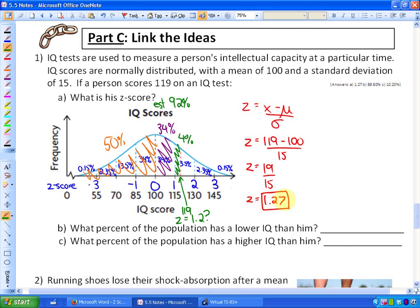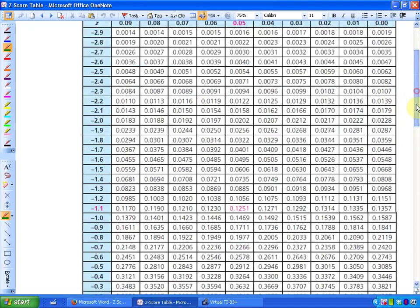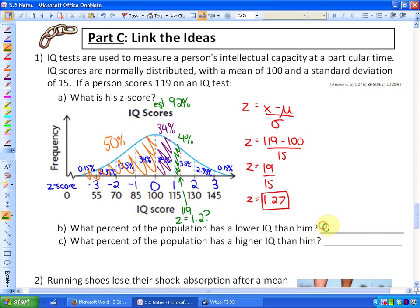But where this is useful with the z-score table is we can actually find an exact answer. If I look for a z-score 1.27 in my z-score table, which I'll do, so it's a positive z-score, I'm going to look for 1.27. So here's 1.2, here's 0.07, and if I do that I'll find out that it's 0.8980. That means there's 89.80% of people below him as far as IQ goes. What percent of the population has a higher IQ? Well, if 89.8% is below him, then if you took that away from 100, you'd have your correct answer. So that would be roughly 10.20% of people have an IQ above him.